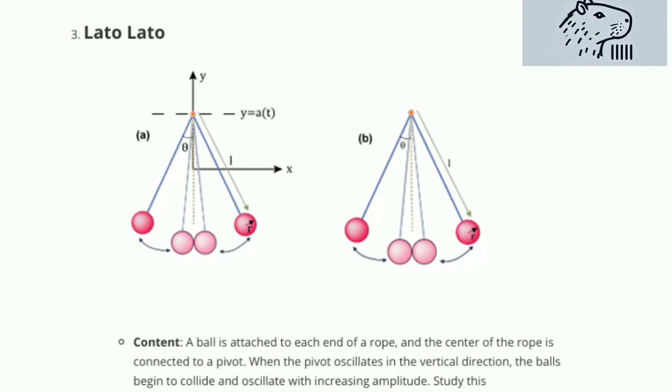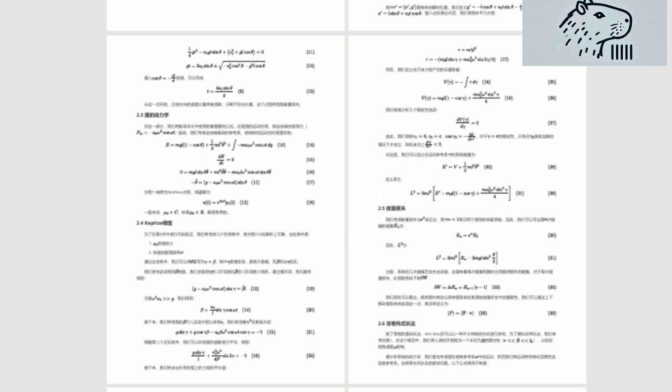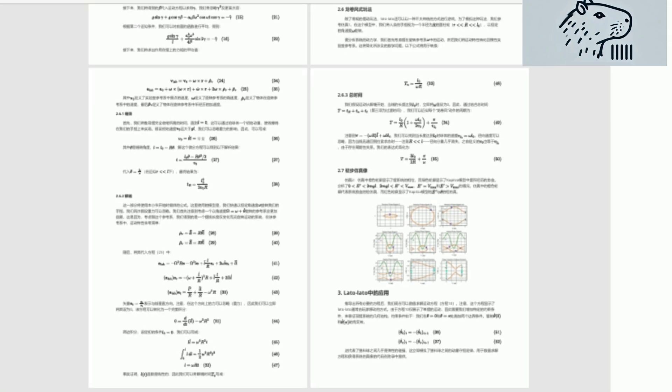Imagine a setup where a ball is attached to each end of a rope with the center of the rope connected to a pivot. When the pivot is oscillated vertically, the balls begin to collide and oscillate with increasing amplitude.